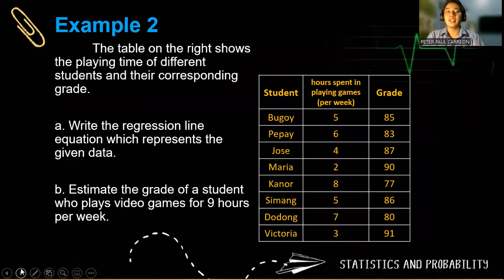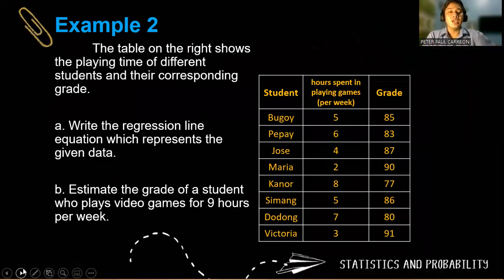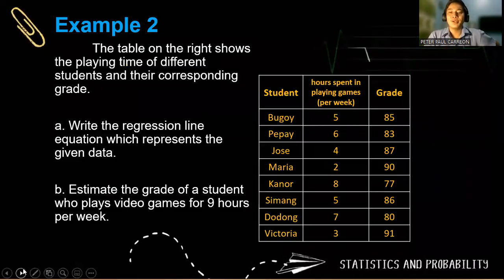Let's have another example. The table on the right shows the playing time of different students and their corresponding grade. So for letter A, we write the regression line equation which represents the given data. And letter B, we estimate the grade of a student who plays video games for nine hours per week. Because from the given, I think the longest is Kanor with eight hours of playing and his grade is 77. So we wanted to predict what will be the grade of a student if he or she plays for nine hours. But before we compute for letter B, we have to solve first for the regression line equation.